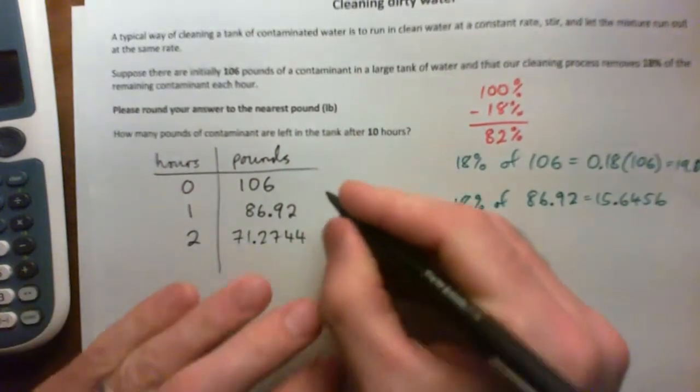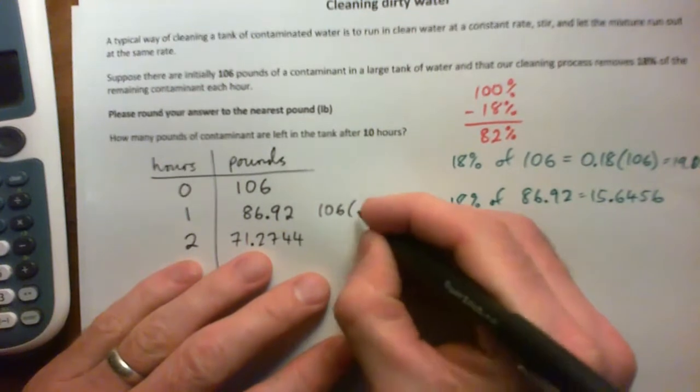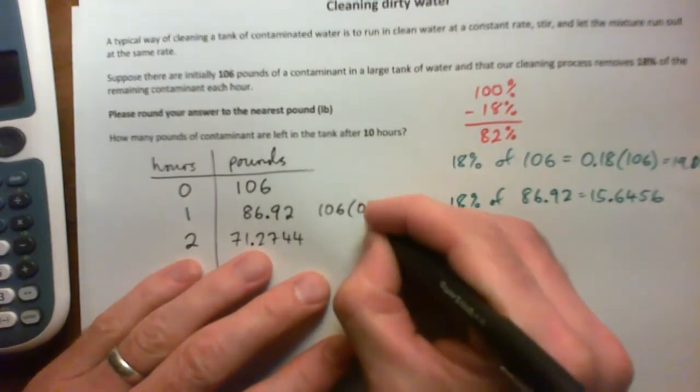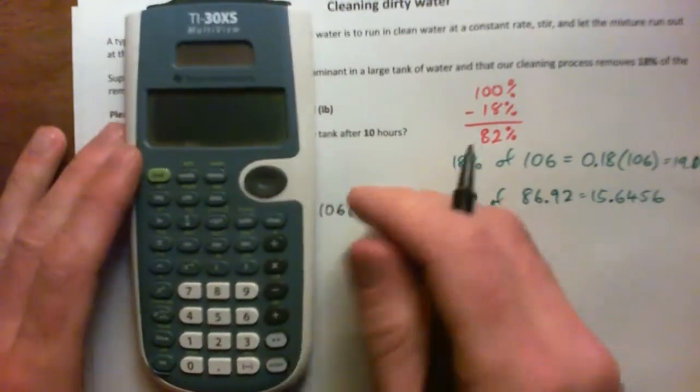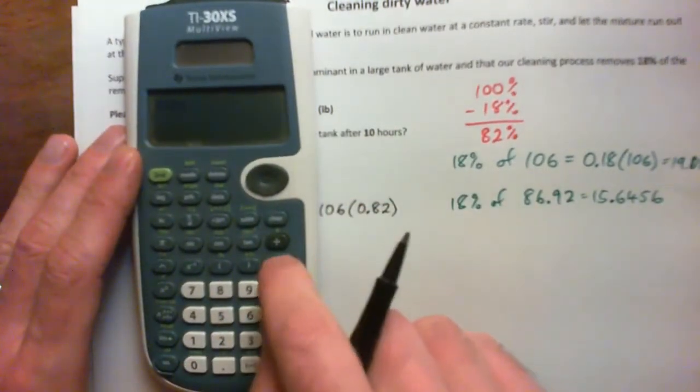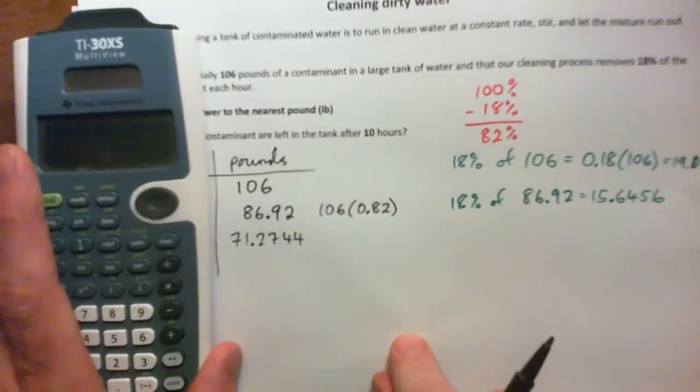So the cool way to do it is to take your 106 pounds and times that by 0.82 or 82%. Because watch what that does. 106 times 0.82 is 86.92. Same thing. So in one calculation, without having to subtract anything, I'm getting the answer.